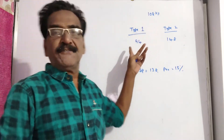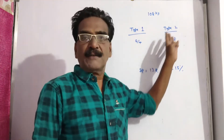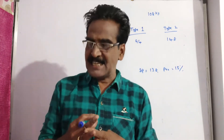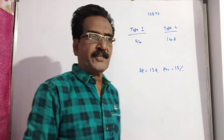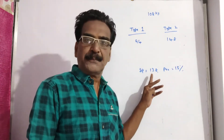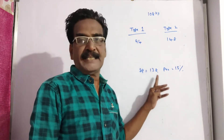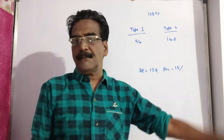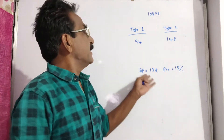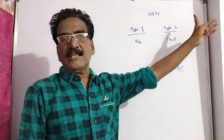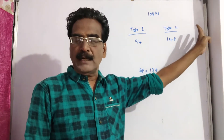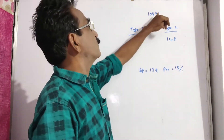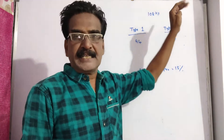Type 1 is Rs.94 per case and type 2 is Rs.148 per case. These two types of sugars are mixed and the mixture is sold at Rs.138, thereby gaining 15% profit. The question is: what is the quantity of type 2 sugar if the total amount of sugar is 108 kg?